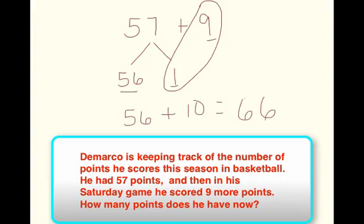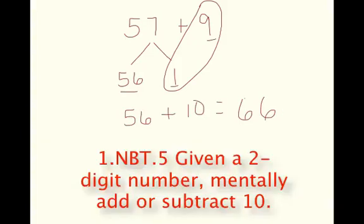So I have 56 plus 10 equals 66. Is it reasonable? Oh, 57 plus 10 would be 67, but it's 1 less, so 66. Yes, it is reasonable.